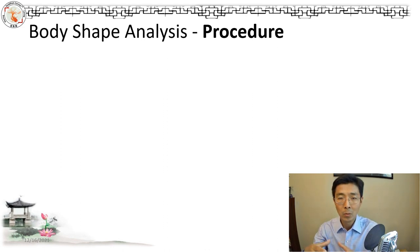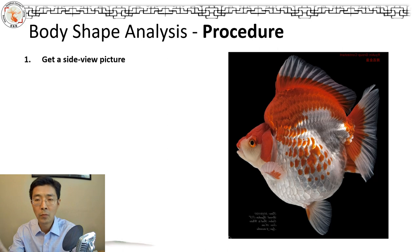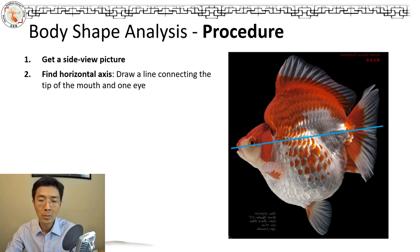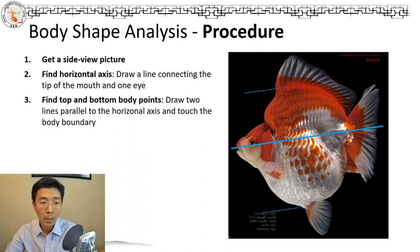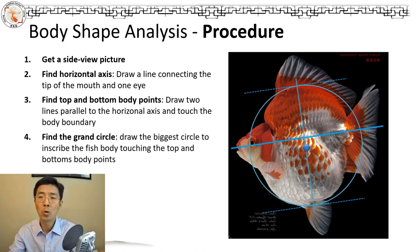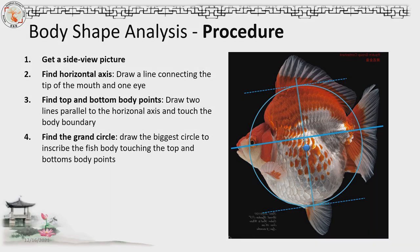I want to analyze the geometry of the body shape, so let's talk about the procedure I developed. The first step: try to get a beautiful, clear picture of the side view. Step two: draw a horizontal X, defined by the eye point and also the most protruding point of the mouth. Those two points define a horizontal line — I call this horizontal X. Then you draw two parallel lines, and with that intersection point you draw as large a circle as possible — a grand circle — to cover the most area of your body shape on the side view. Make sure you mark the center of the grand circle.